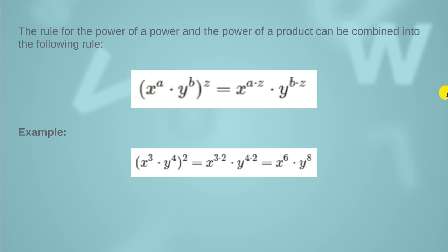For example, x raised to the power 3 multiplied by y raised to the power 4, and both are raised to the power 2. When we open the brackets, this power 2 is multiplied by the exponents of x and y separately — we are not multiplying 2 with the base, but with the exponent. So we get x raised to the power 3 times 2, and y raised to the power 4 times 2, giving x raised to the power 6 and y raised to the power 8.